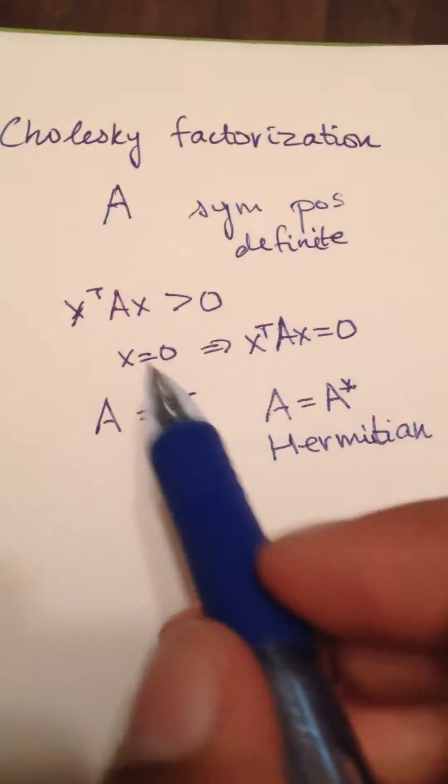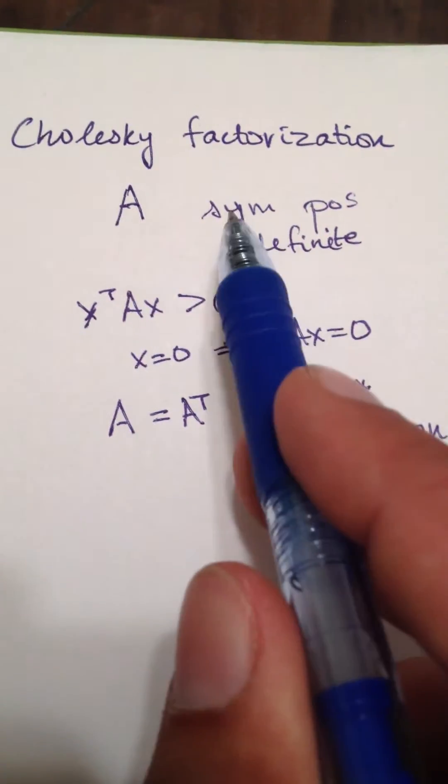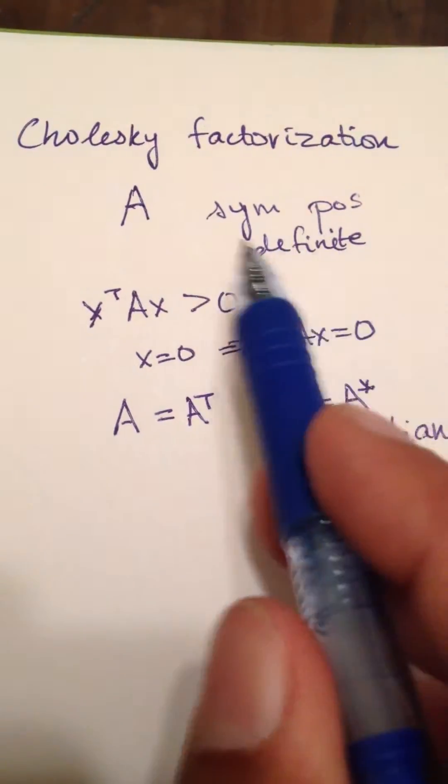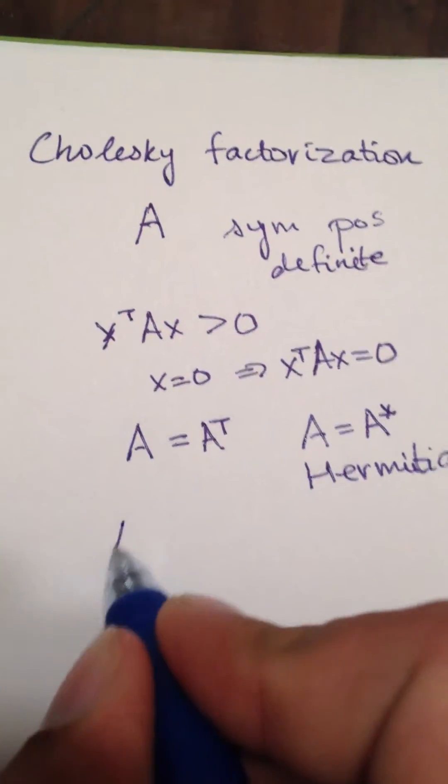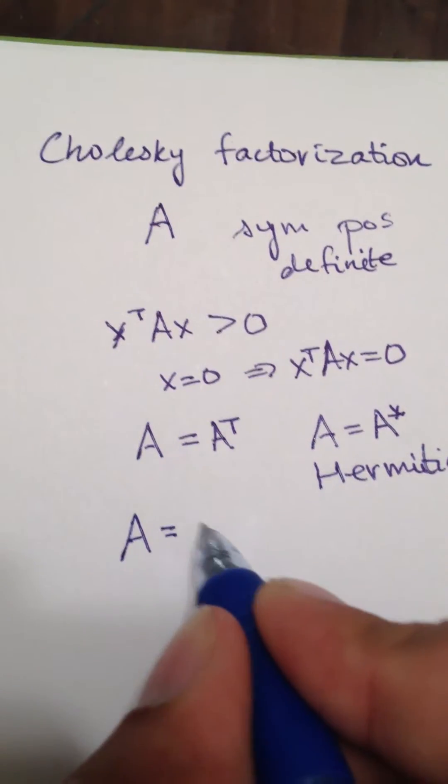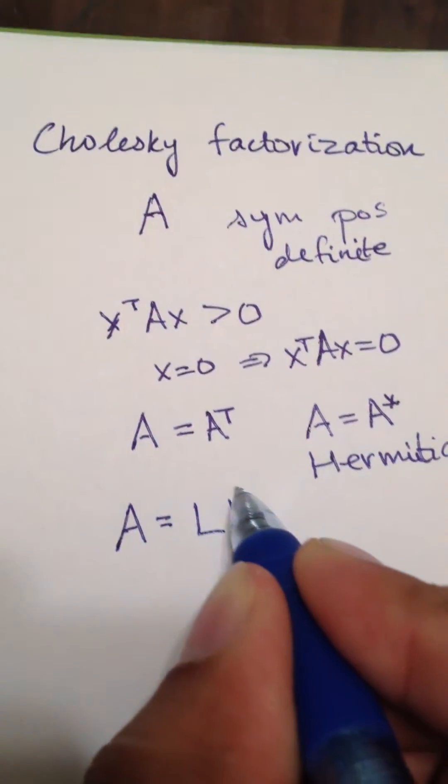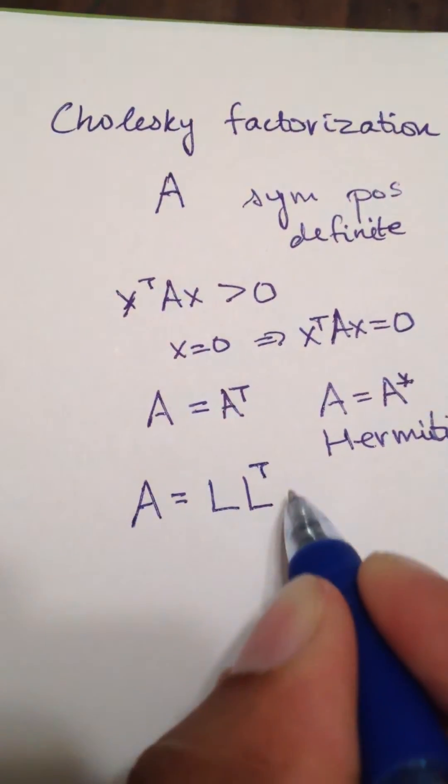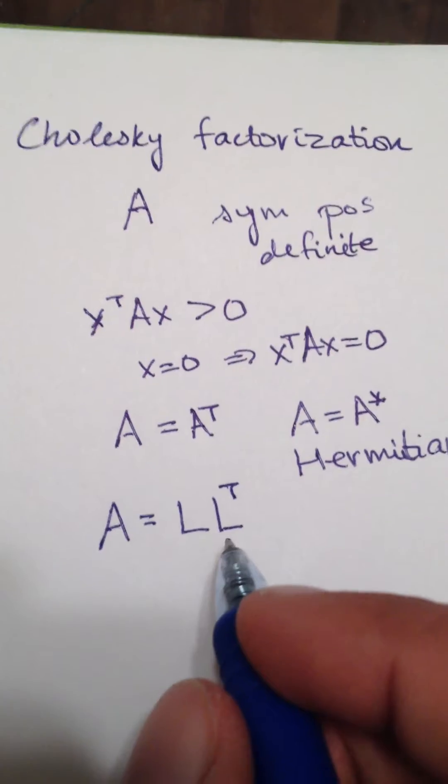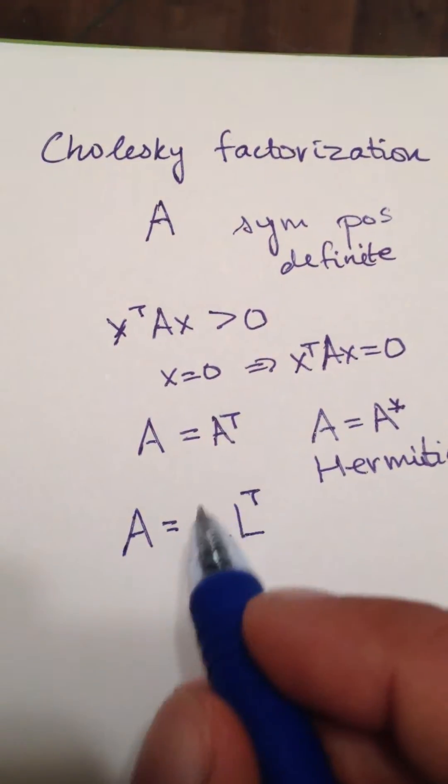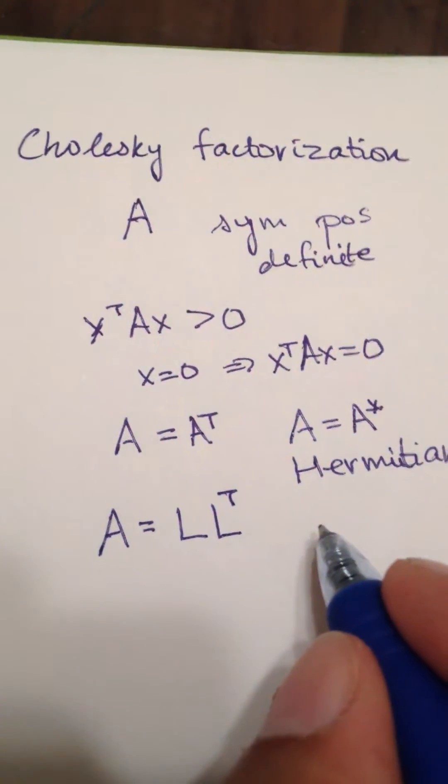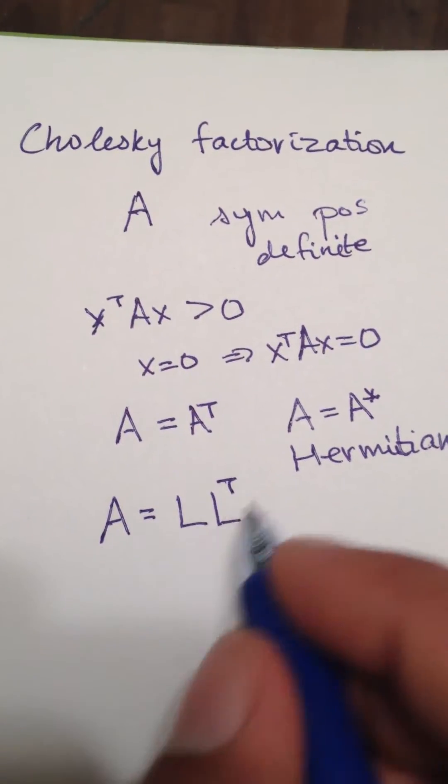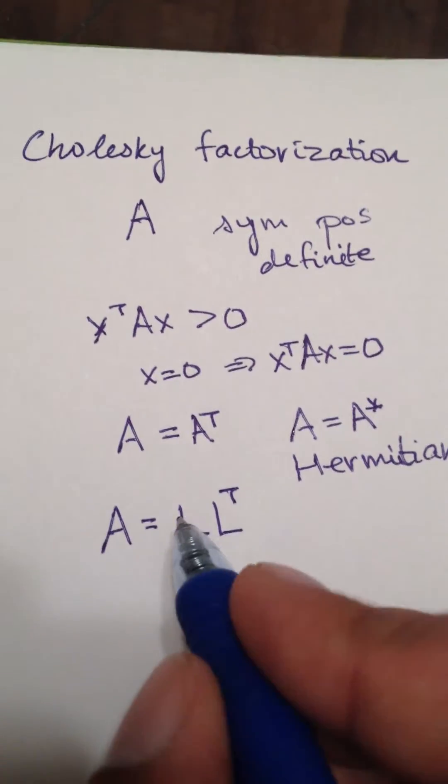Okay, so assuming that A satisfies this property of being Hermitian positive definite, or for real matrices, symmetric positive definite, we can always factor A into L L transpose, where L is a lower triangular matrix and L transpose is an upper triangular matrix. And the other thing about these L's is that the diagonal is always going to be positive. So this factorization is known as the Cholesky factorization.